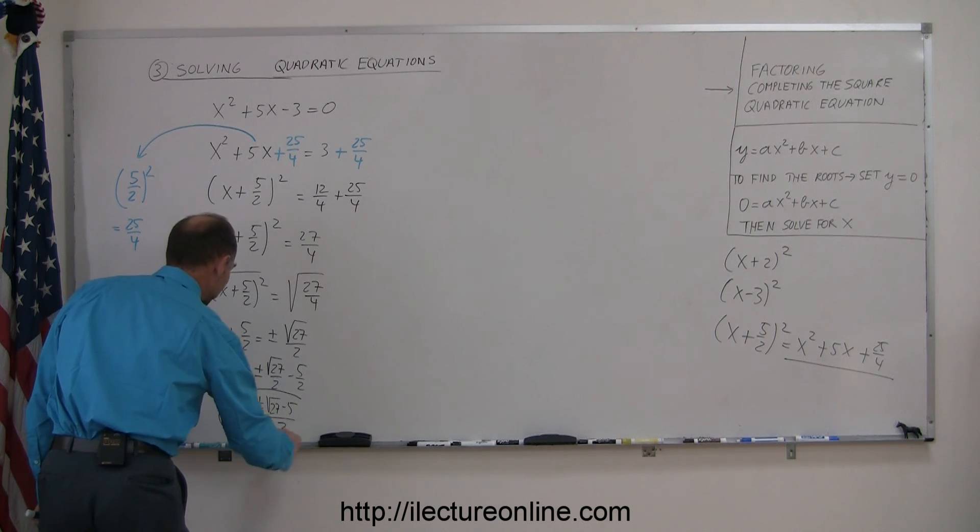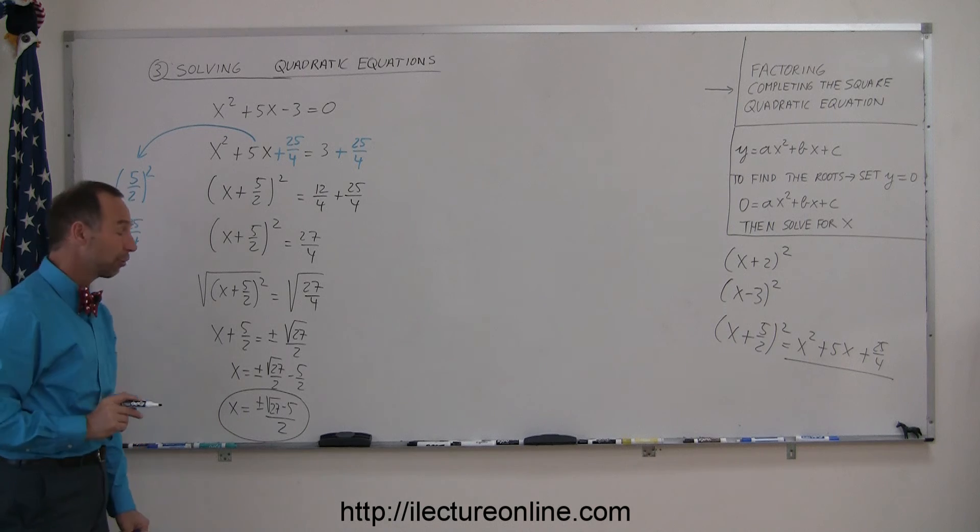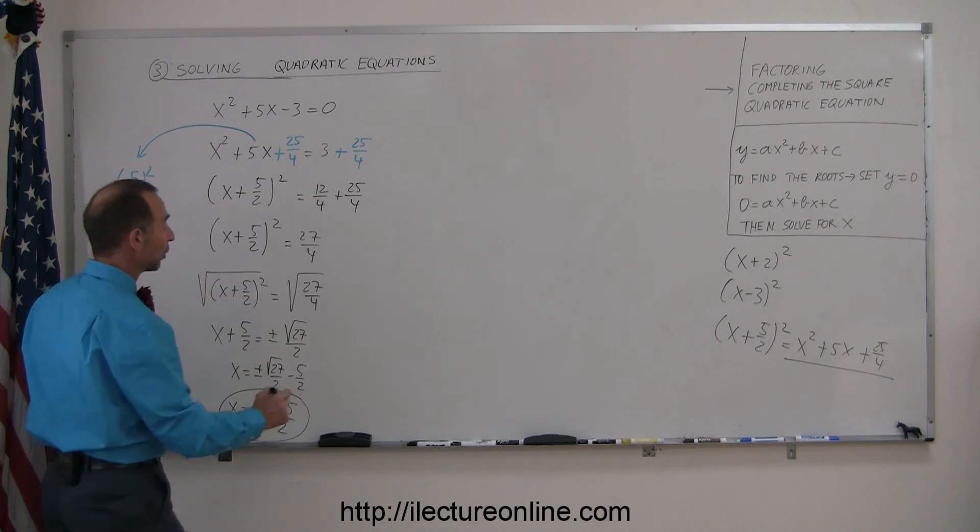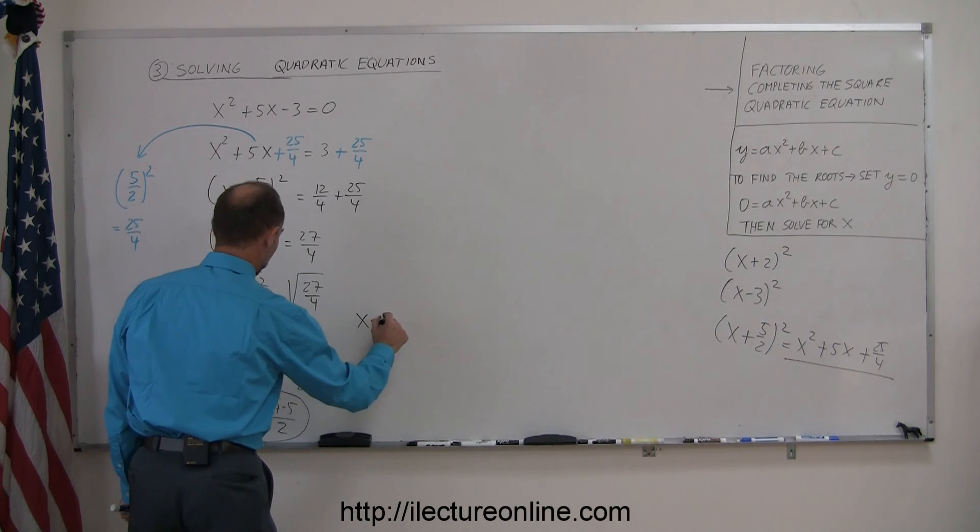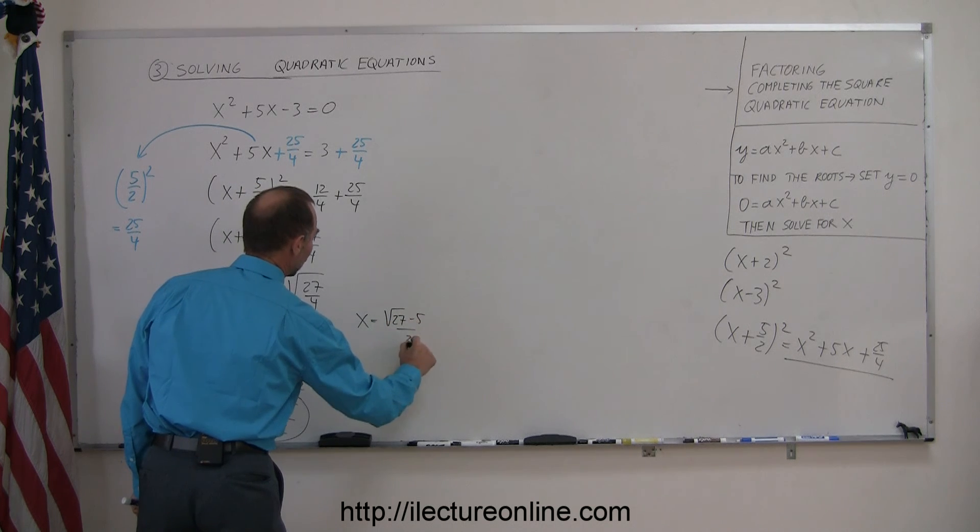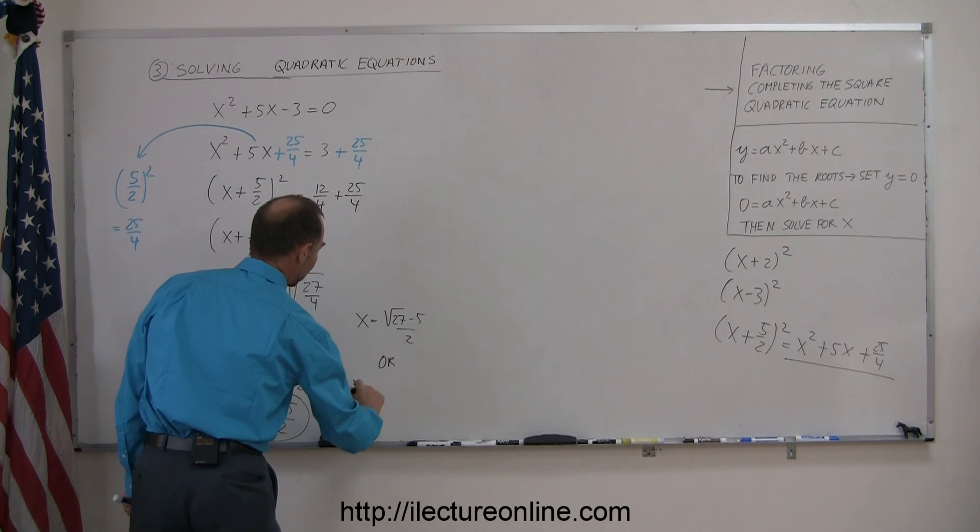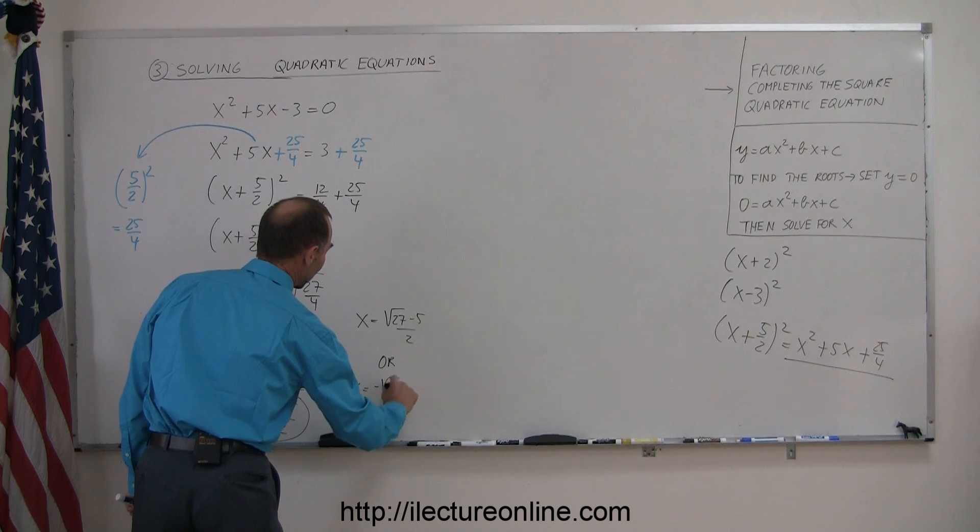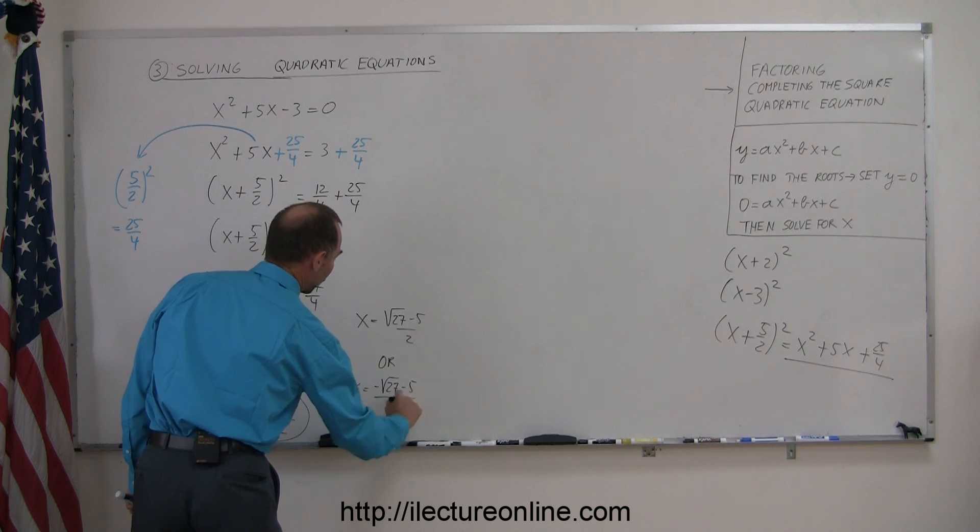And there are the two solutions or the two roots of my quadratic equation, in other words, x is equal to the square root of 27 minus 5 over 2, or x is equal to minus the square root of 27 minus 5 over 2.